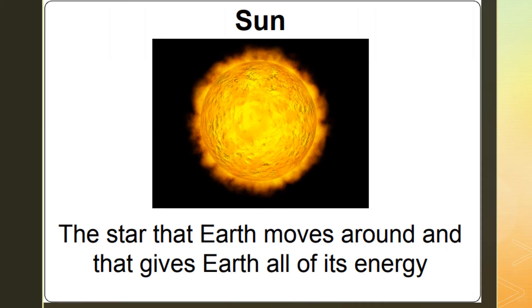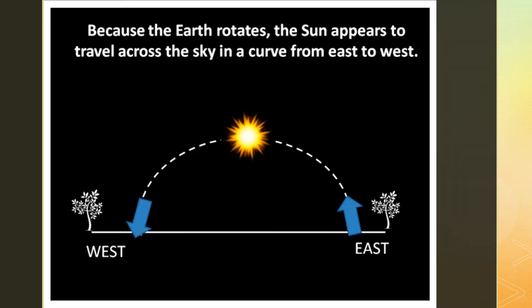The sun is the star that Earth moves around and that gives Earth all of its energy. The next concept we will talk about is we can observe and record how the sun appears to change position in the sky, such as during sunrise and sunset, and through the changing location of an object's shadow during different times of the day.